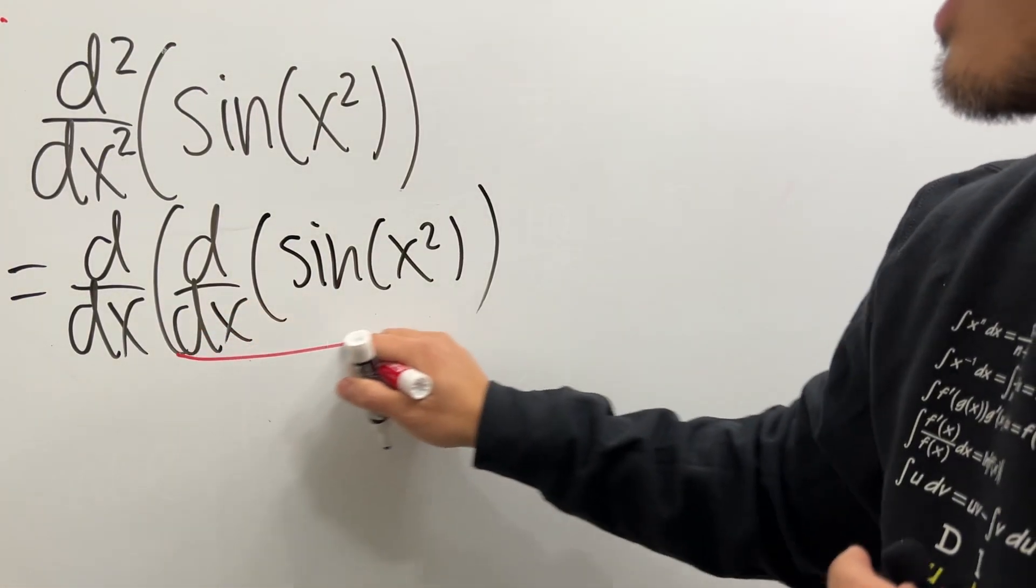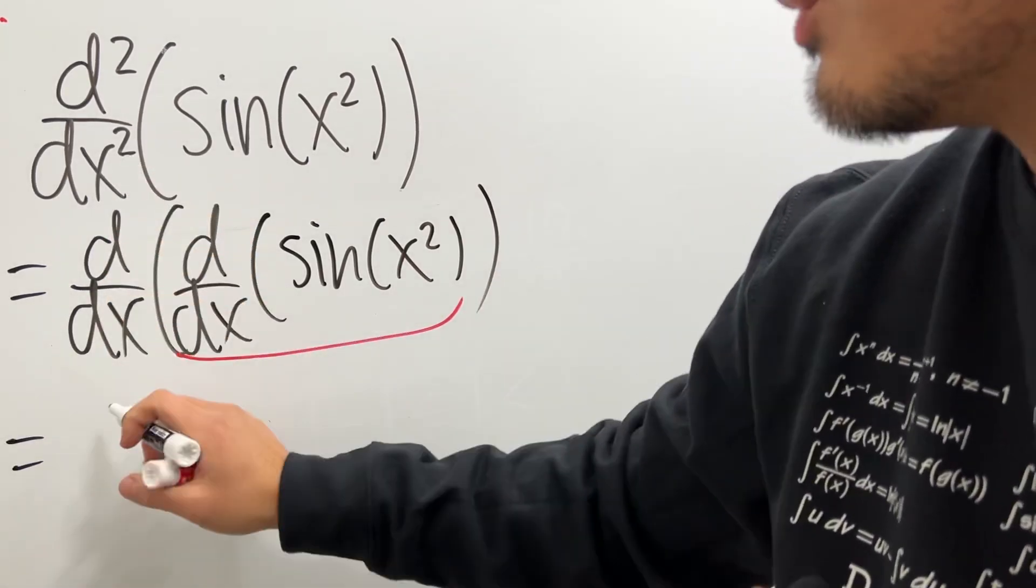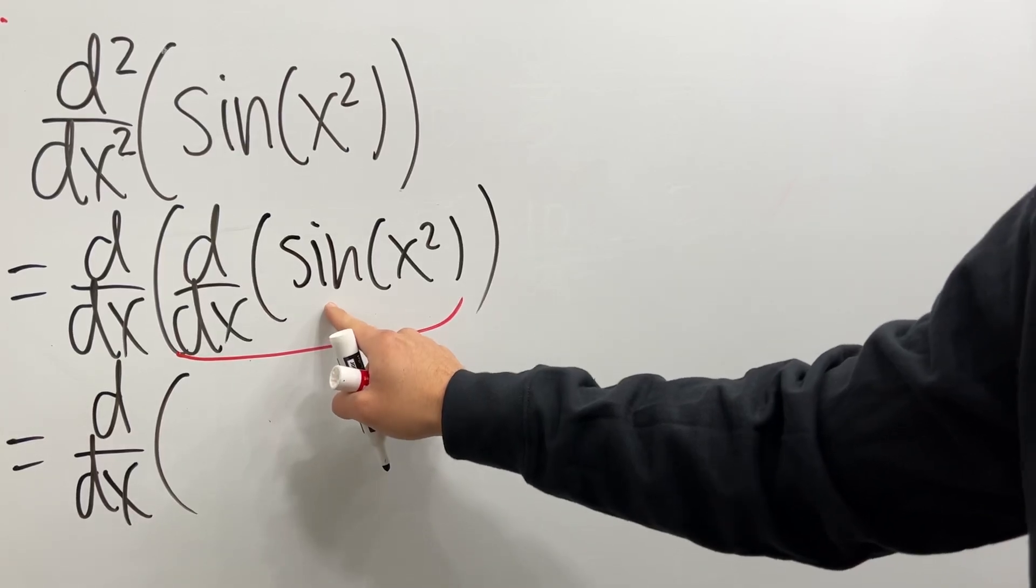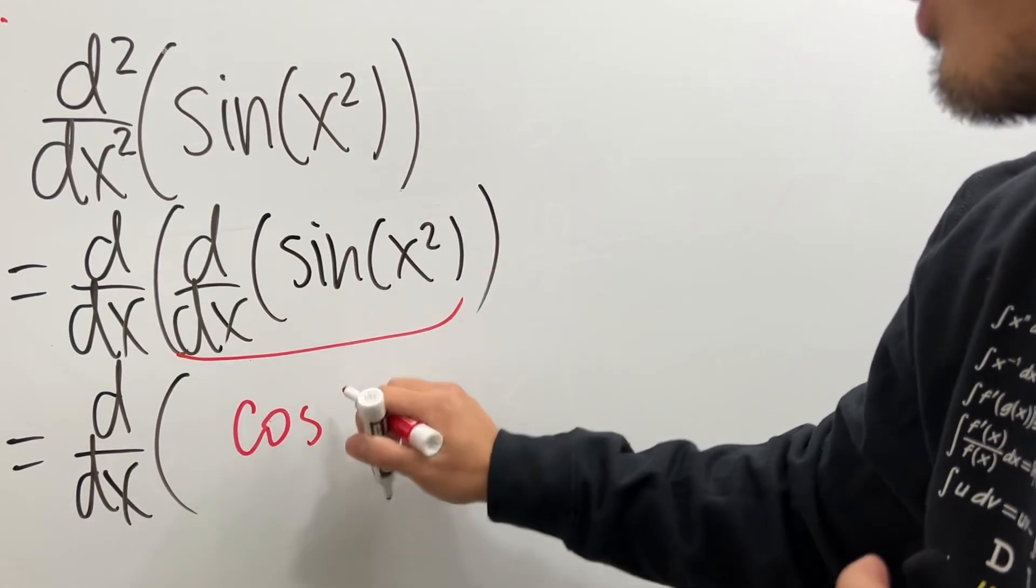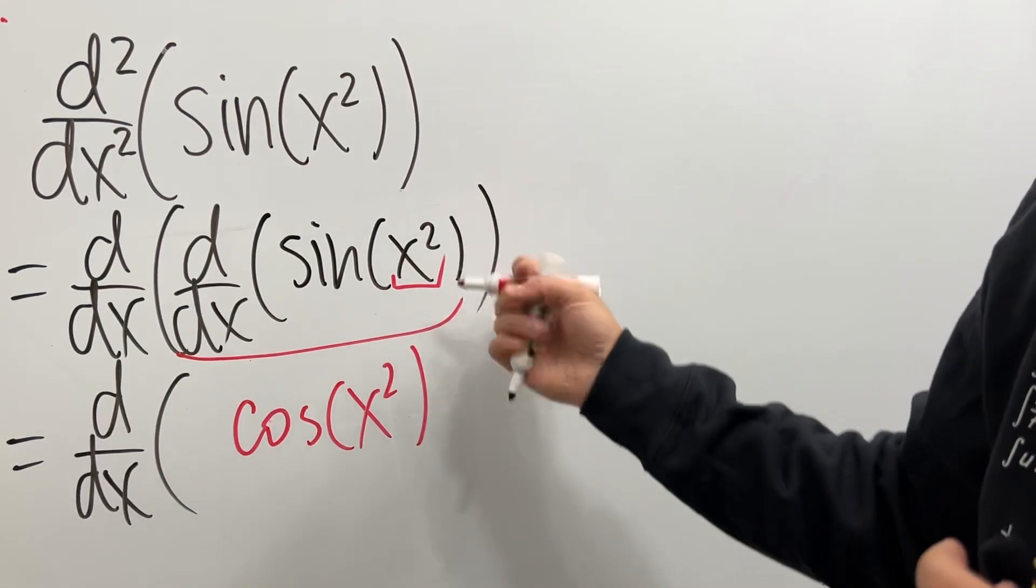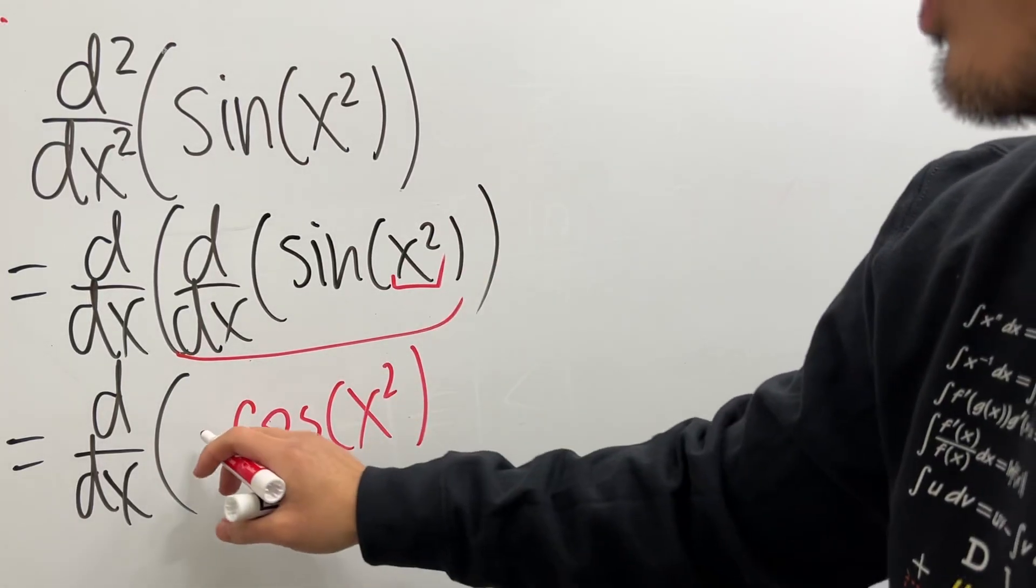Alright, inside out, the derivative of the inside, this right here stays. You see, derivative of sine is cosine, so you write that down. Input stays. And then, multiply by the derivative of the inside because of the chain rule. Derivative of x squared is 2x.